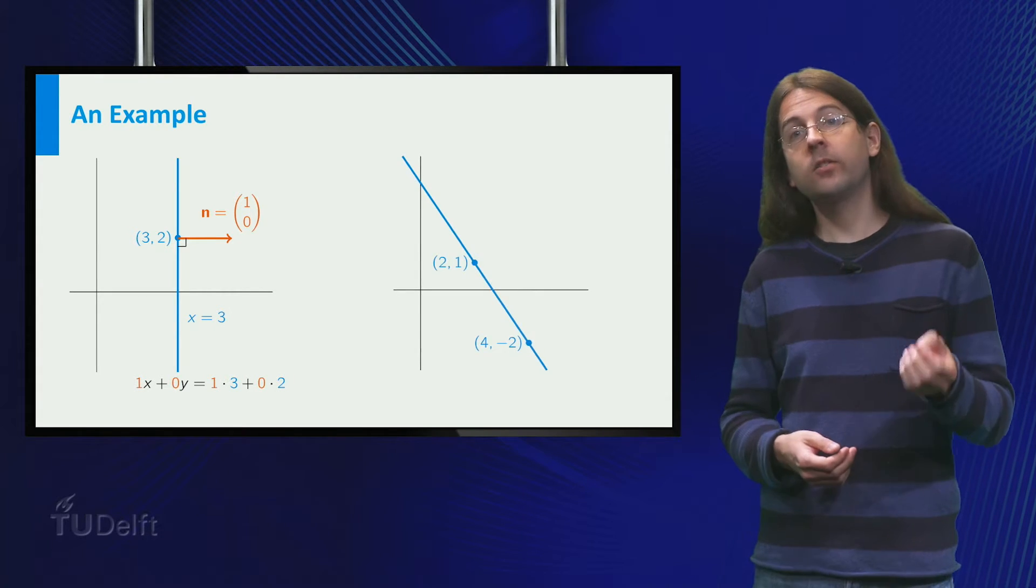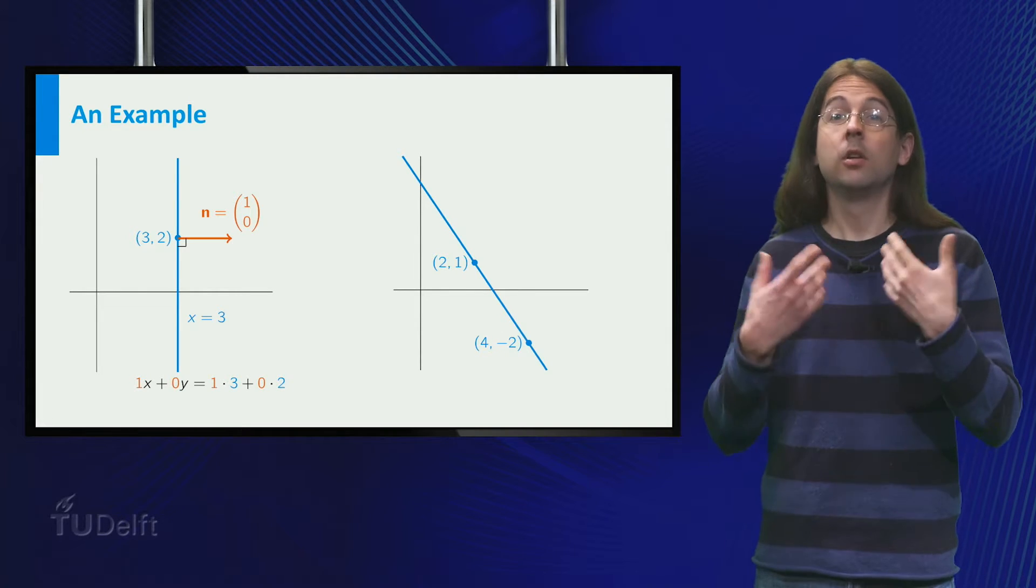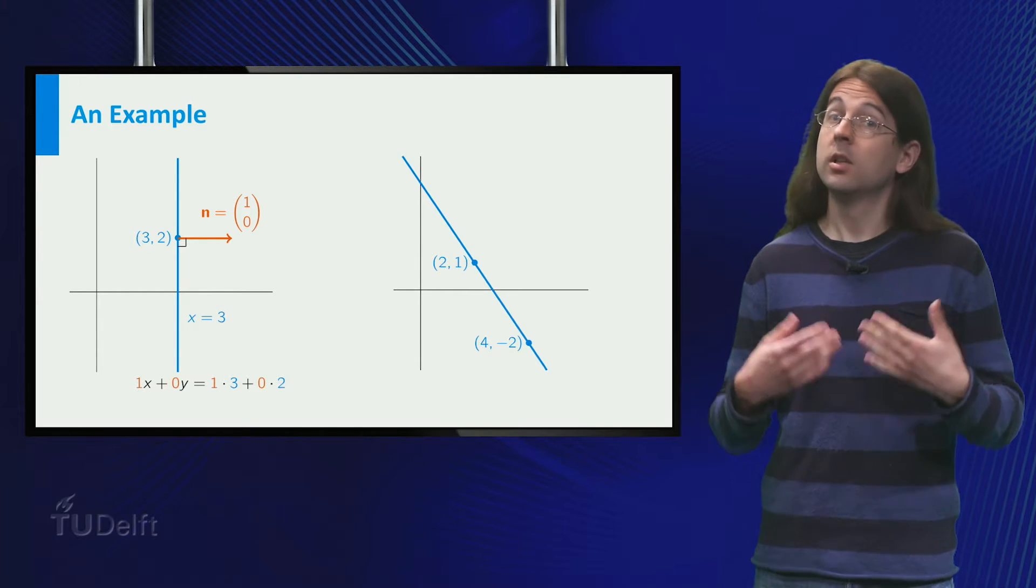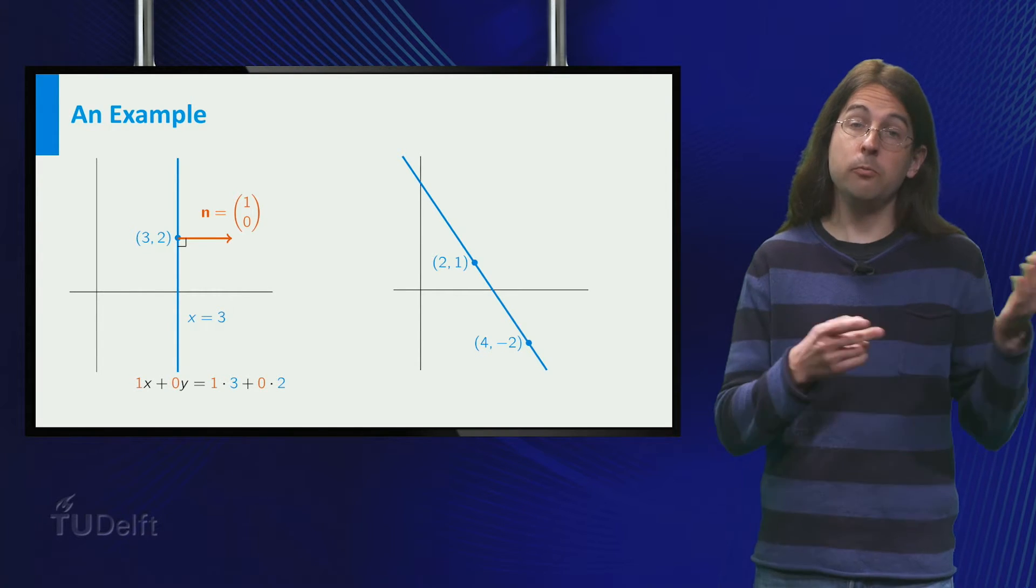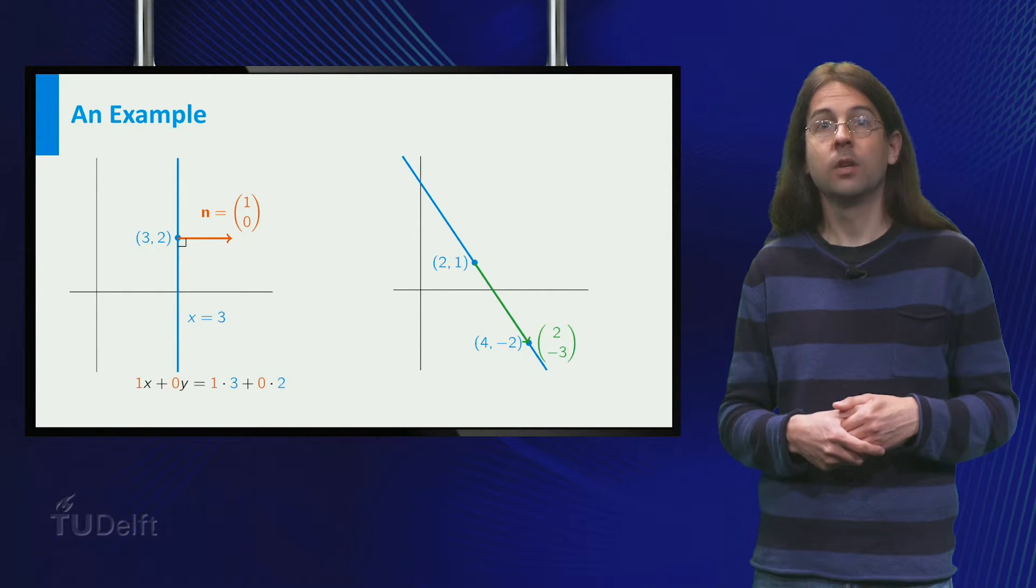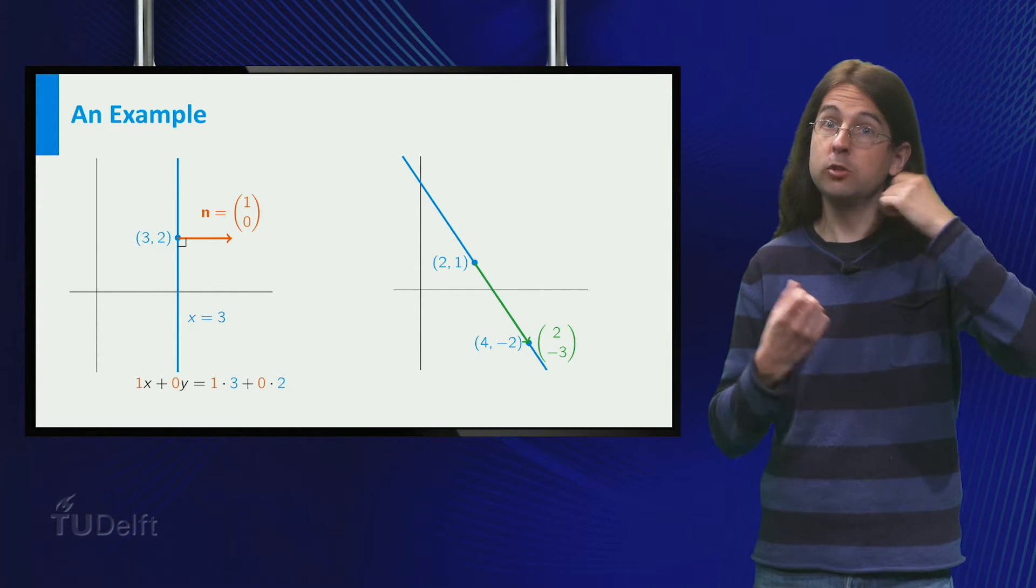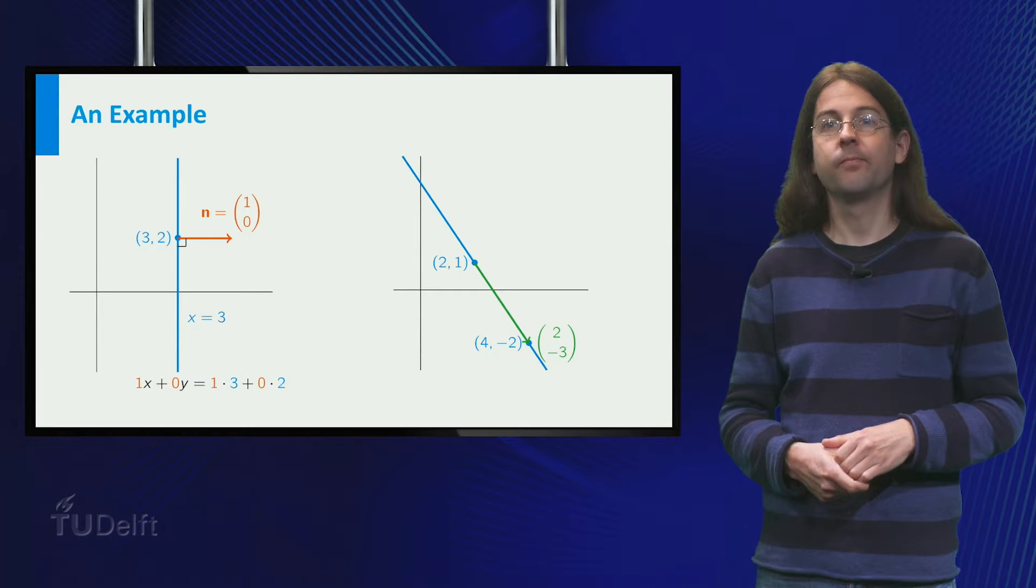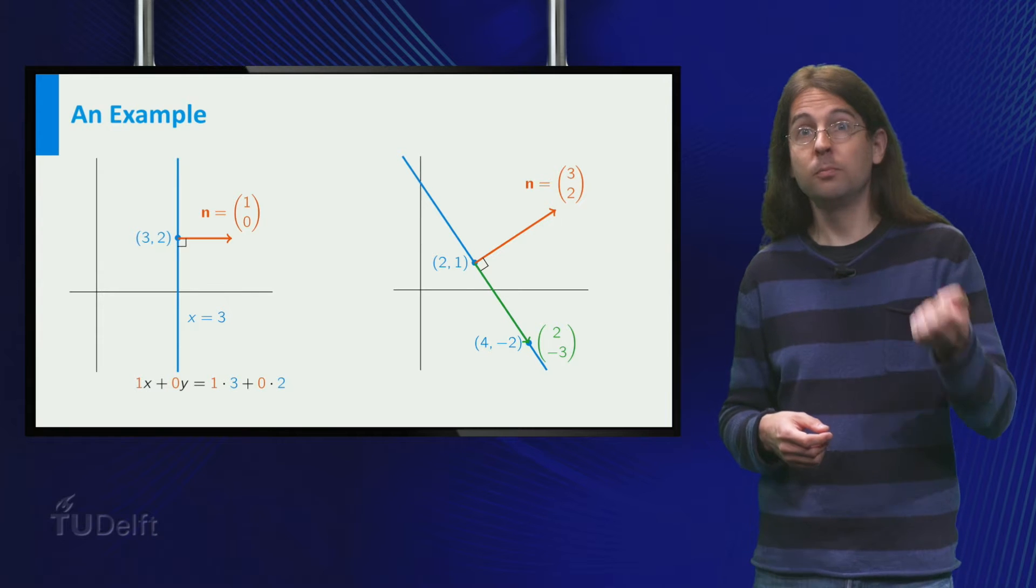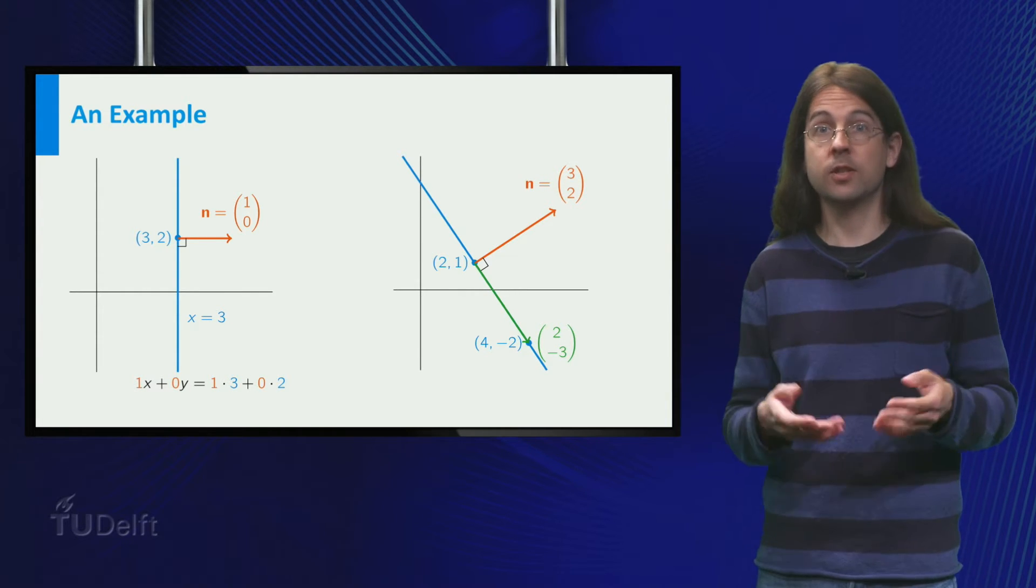A more interesting line is the line through two one and four minus two. To find the equation for this line, we need the normal vector. The direction of the line is from four minus two to two one, so it is two minus three. You obtain the normal vector by swapping the two components and multiplying one by minus one. Indeed, the vector is perpendicular to two minus three, as our dot product equals six minus six is zero.